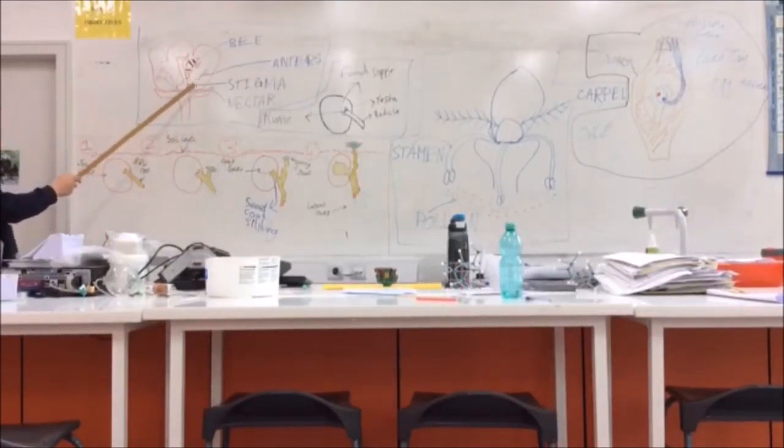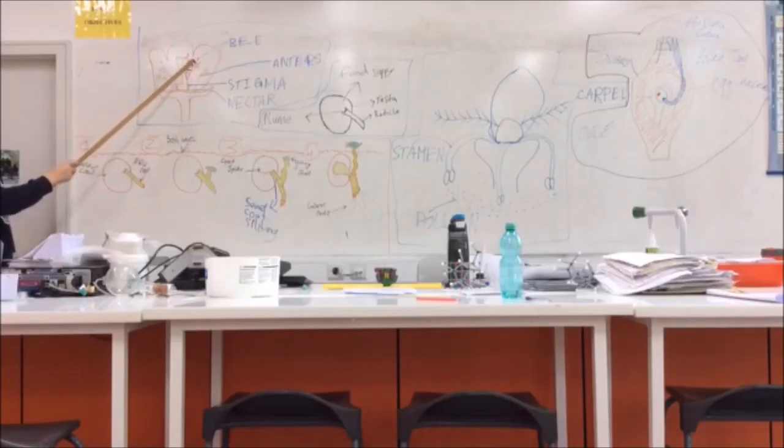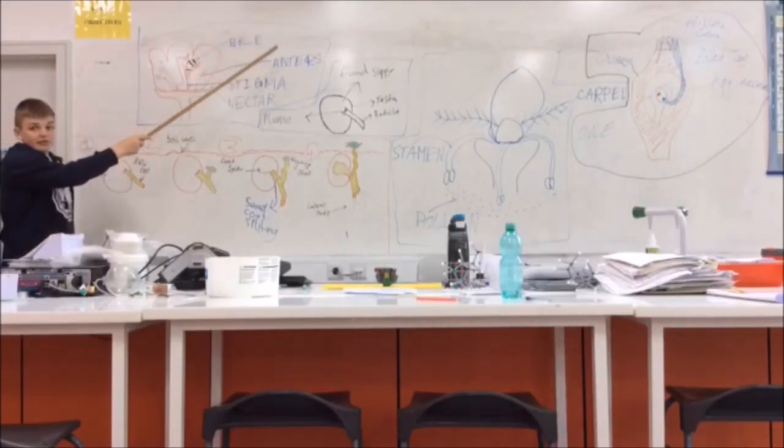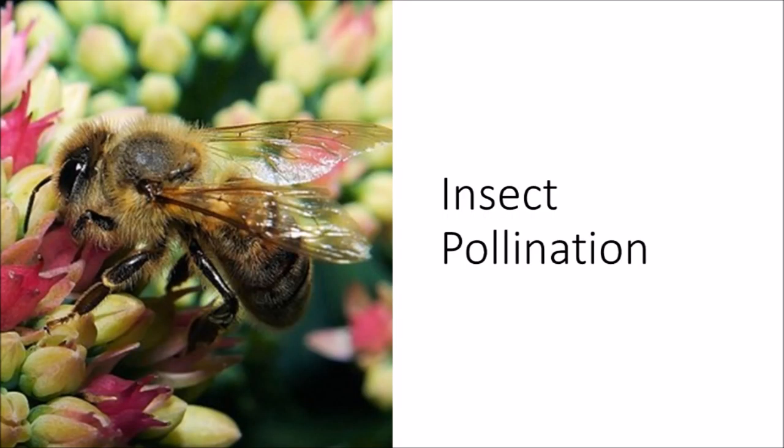Another type of pollination is pollination by insects. This is where the insect goes into the flower to try and get the nectar at the bottom and ends up brushing off the anther, which collects pollen, which then transfers to the next plant. That will brush off the stigma here and get into the ovaries, therefore making another plant.